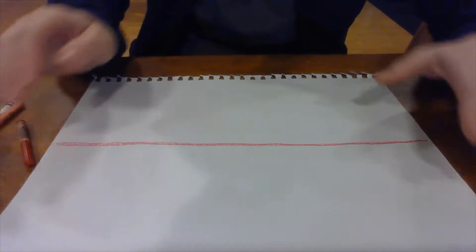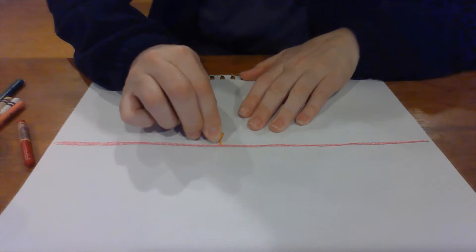There's also lines that go straight up and down. Those are vertical lines. You can choose a different color crayon. Your vertical lines can go all the way from the top to the bottom on your paper, or they can just go part of the way.